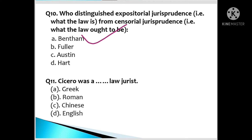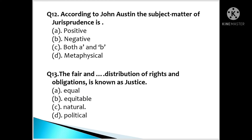Question number 11: Cicero was a law jurist. Which country did he belong to? A. Greek, B. Roman, C. Chinese, D. English. The correct answer is B, Roman. Question number 12: According to John Austin, the subject matter of jurisprudence is: A. Positive, B. Negative, C. Both A and B, D. Metaphysical.